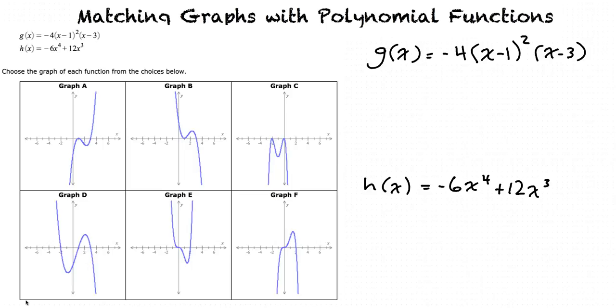Okay, I think I understand end behavior now. But what were you saying earlier about the multiplicity of zeros or something? That's exactly what I was hoping you would ask about. As you know, the zeros are the x-intercepts of the graph. We can figure out the zeros when the function is written in factored form.